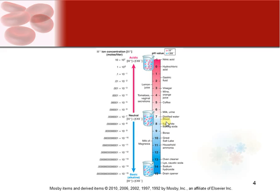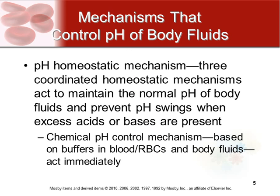Going in the other direction, you can see things up to baking soda — not directly what we eat, but a lot of these are cleaning products. These don't have a high hydrogen concentration; they have a high hydroxide concentration — that OH combination. So this side is basic or alkaline, and the other side is acidic.